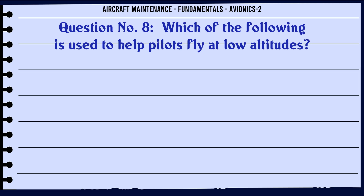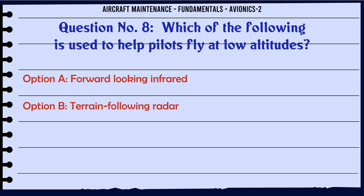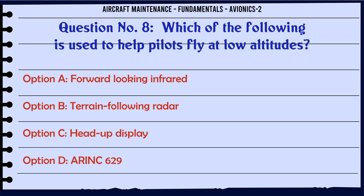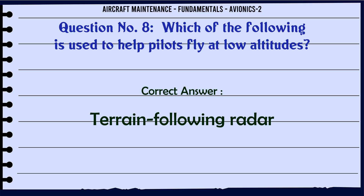Which of the following is used to help pilots fly at low altitudes? A. Forward Looking Infrared, B. Terrain Following Radar, C. Head Up Display, D. ARINC 629. The correct answer is Terrain Following Radar.